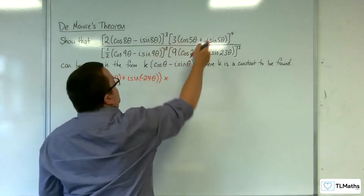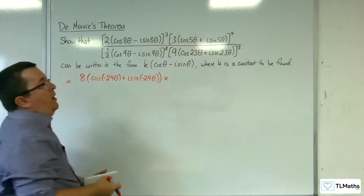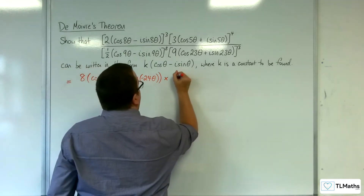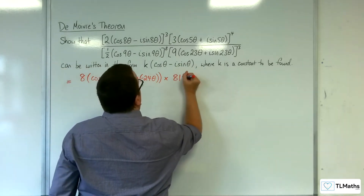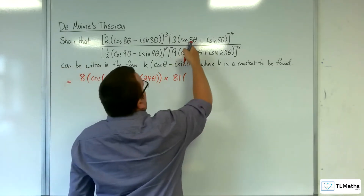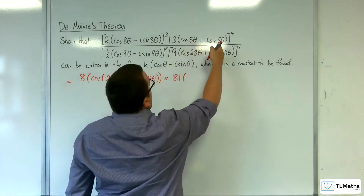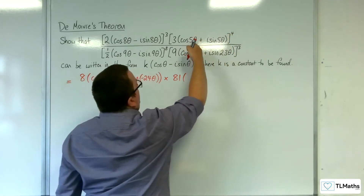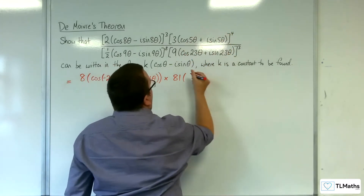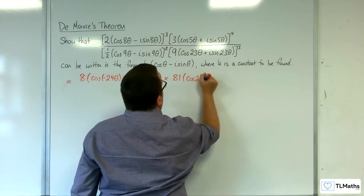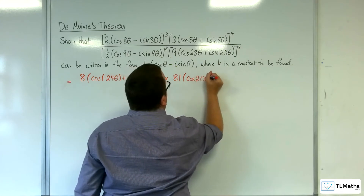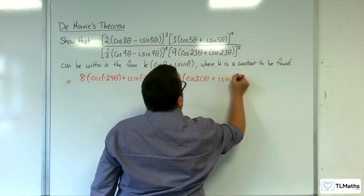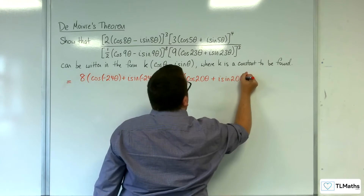Then we've got 3 to the power of 4, so 81, times cosine 5 theta plus i sine 5 theta to the power of 4. So 5 times 4 is 20, so cosine of 20 theta plus i sine 20 theta.